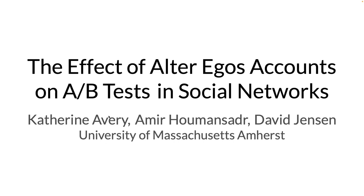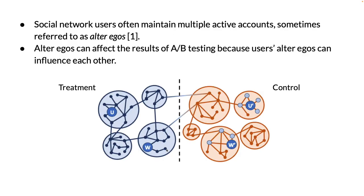I'm Katherine Avery from the University of Massachusetts Amherst, and I am presenting a poster on the effect of alter ego accounts on A-B tests in social networks. Alter egos are multiple active accounts maintained by one user. Alter egos can affect the results of A-B testing because users' alter egos can influence each other for some susceptible kinds of A-B tests.